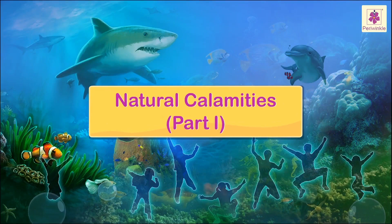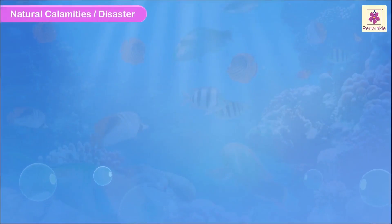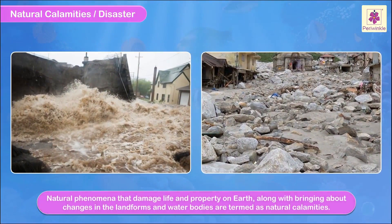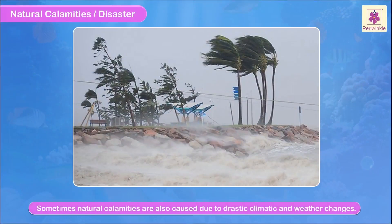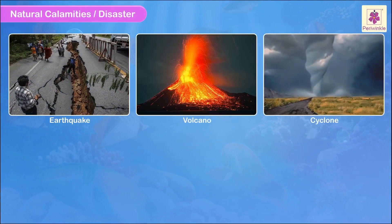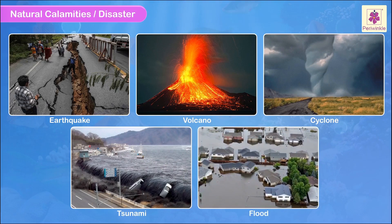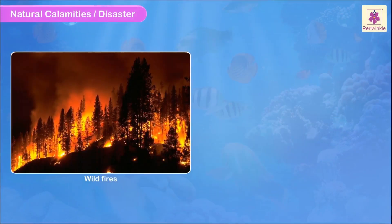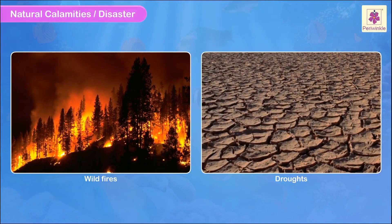Natural Calamities. Natural phenomena that damage life and property on earth, along with bringing about changes in the landforms and water bodies, are termed as natural calamities. Sometimes natural calamities are also caused due to drastic climatic and weather changes. Earthquakes, volcanoes, cyclones, tsunamis, floods, wildfires, and droughts are some examples of natural disasters.